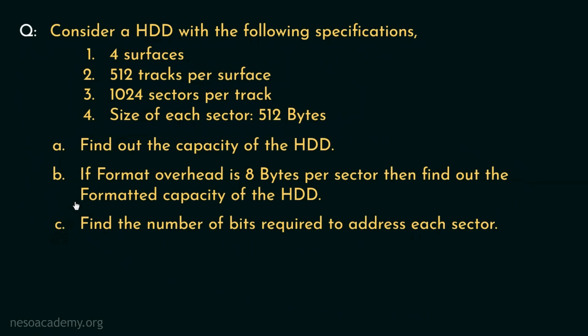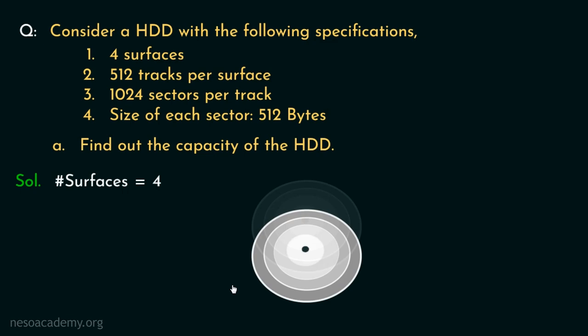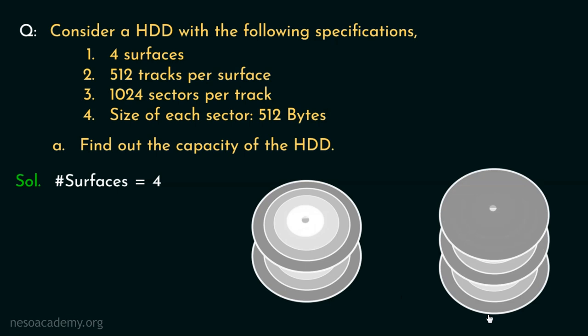Consider the first one: find out the capacity of the hard disk drive. Now if you can recall the last session, there we learnt how to calculate the capacity of one disk. Here in the specs, the number of surfaces has been provided as 4. This means there may be 2 magnetic disks with the ability to store data on both sides of each, or there may be 3 disks where only the middle one stores data on both sides, whereas the top and bottom disks store data on only one side. In both cases, the number of surfaces is 4.